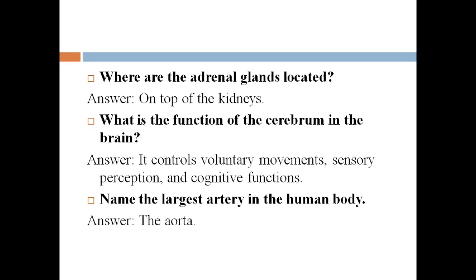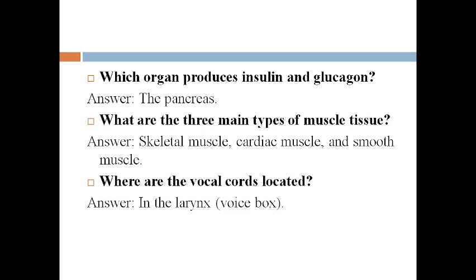Name the largest artery in the human body. The answer is the aorta. Which organ produces insulin and glucagon? The organ that produces insulin and glucagon is the pancreas.